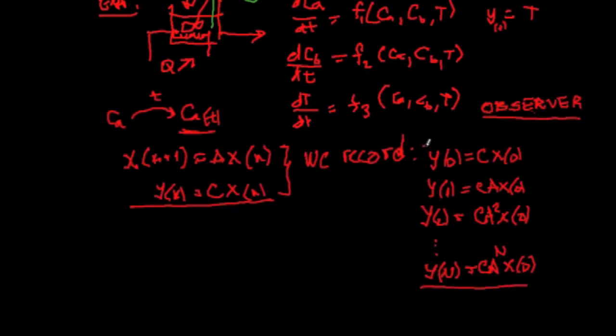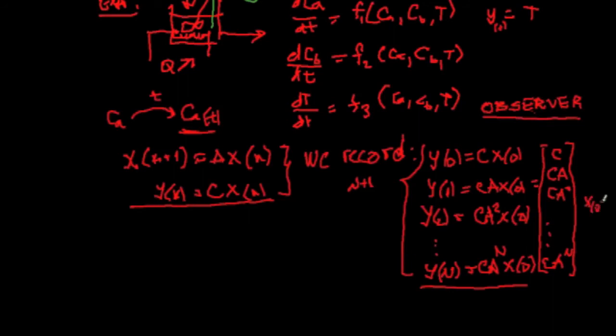In other words, we have here the n plus 1 measurements. And what is this on the right side? Now, on the right side, we have here a matrix that is C, CA, CA², and all the way to CA^n. And this is just x0. Now we see that this is n+1, this is 1, so this is n+1 by n, and this is n by 1.